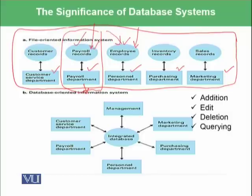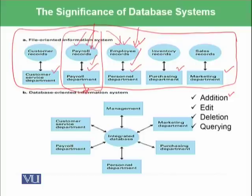So if we want to add another employee, we need to add it in both places. Similarly, if we want to delete a record — if any employee has left the company — that record needs to be deleted from this file and from this file. And if we want to perform a query, for example, give me the list of all employees named Ali who live in Islamabad and who are given XYZ salary, I need to query this file and then this file and then merge all the results.